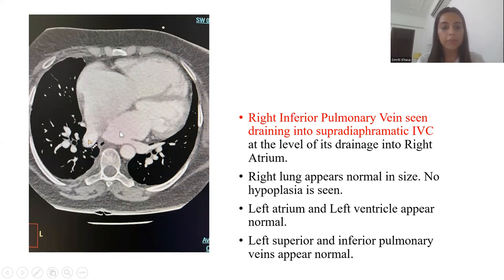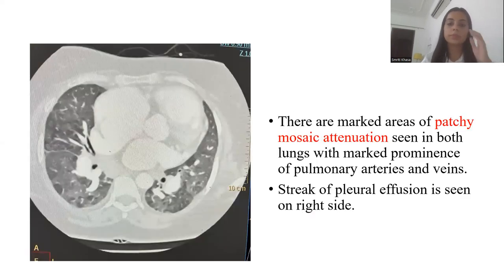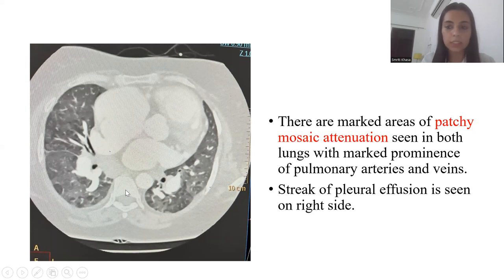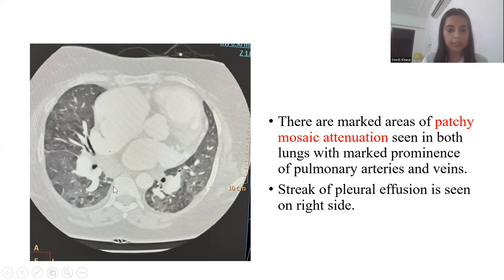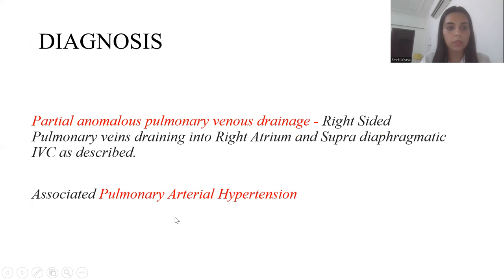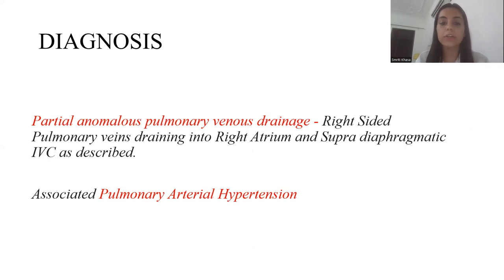Left atrium and left ventricle appear normal. Left superior and inferior pulmonary veins also appear normal. This image in the lung window shows marked areas of patchy mosaic attenuation seen in both lungs with marked prominence of pulmonary arteries and veins. A streak of pleural effusion is also seen on the right side as well as on the left side. The diagnosis in this case was partial anomalous pulmonary venous drainage — right-sided pulmonary veins draining into the right atrium and supra-diaphragmatic part of the IVC — with associated pulmonary artery hypertension.